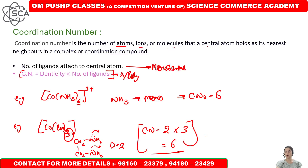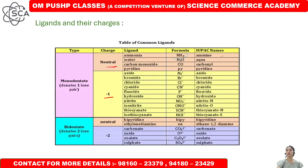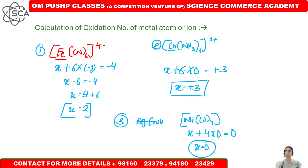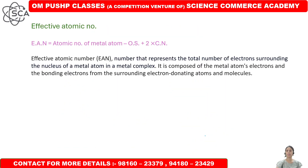So, to summarize what we have covered: Coordination Number is calculated as denticity multiplied by number of ligands. You need to learn the charges of ligands. Then we have the oxidation number calculation. Next we have is your Effective Atomic Number.